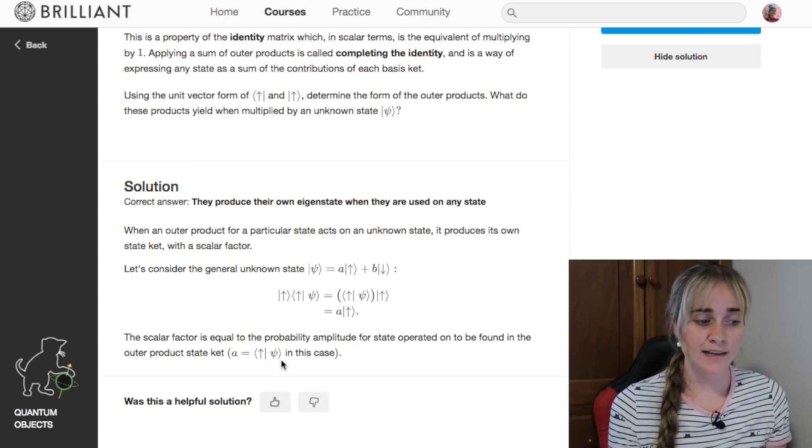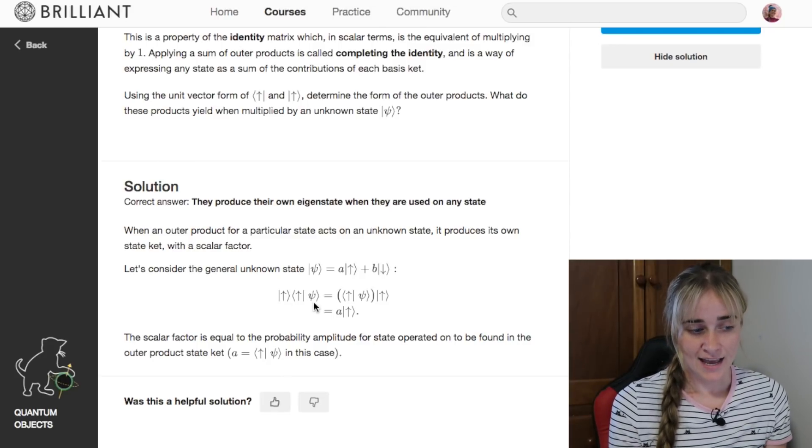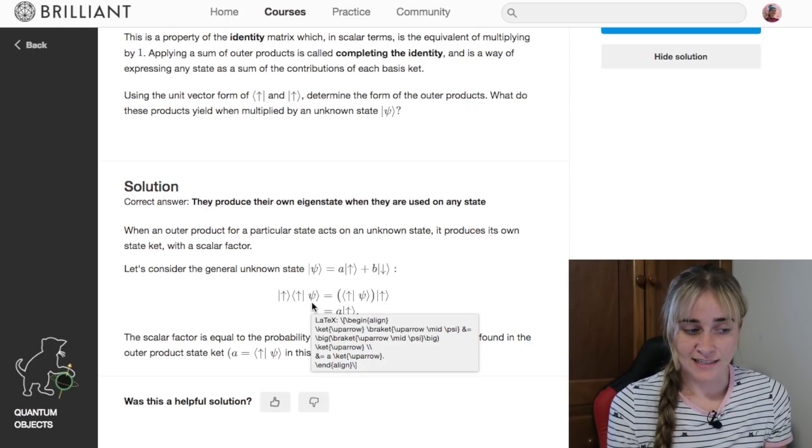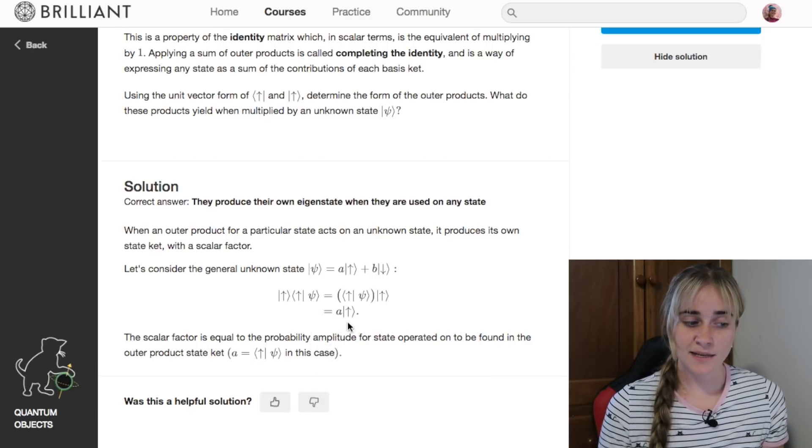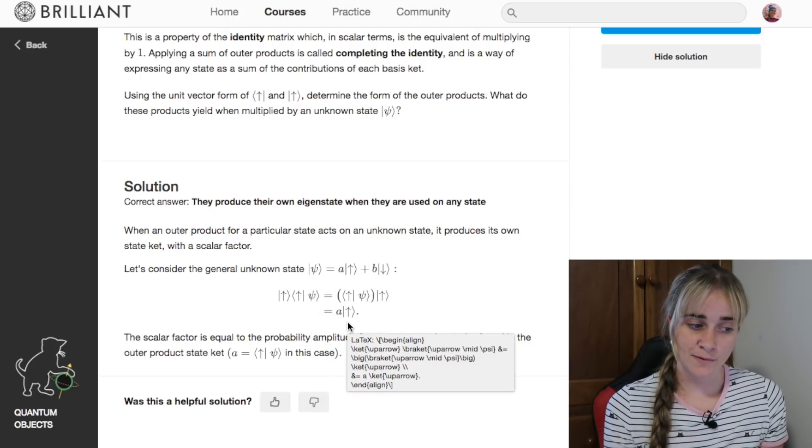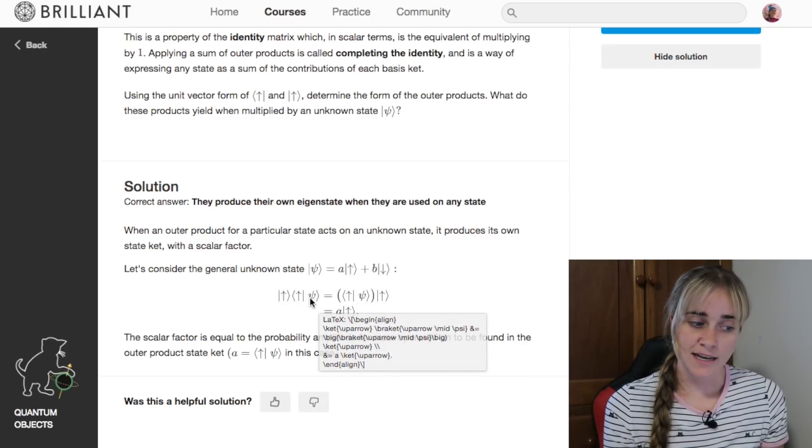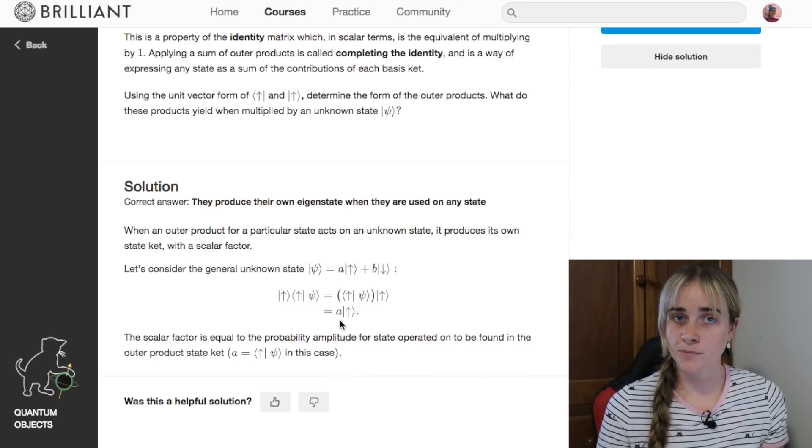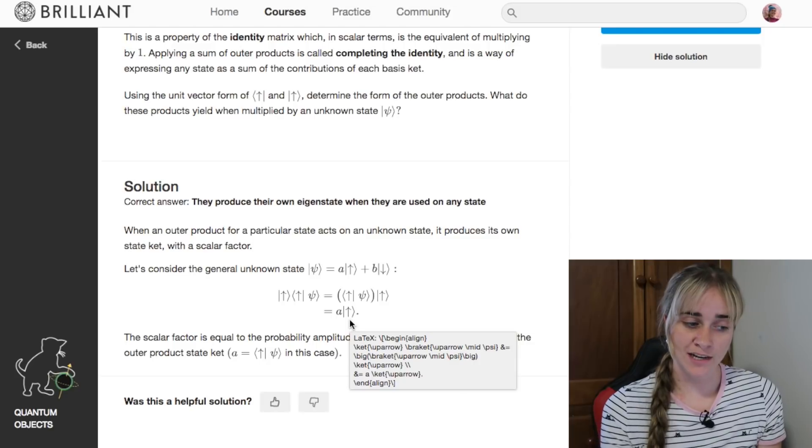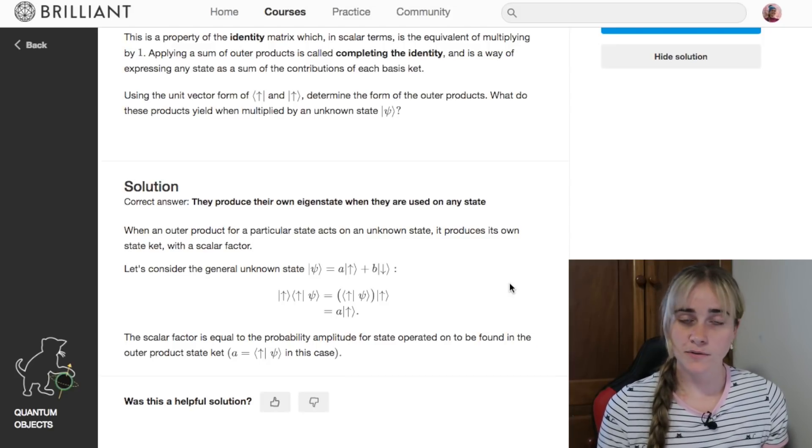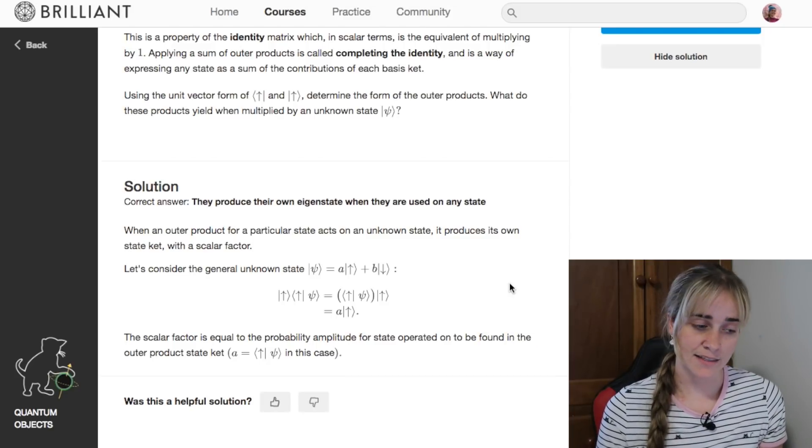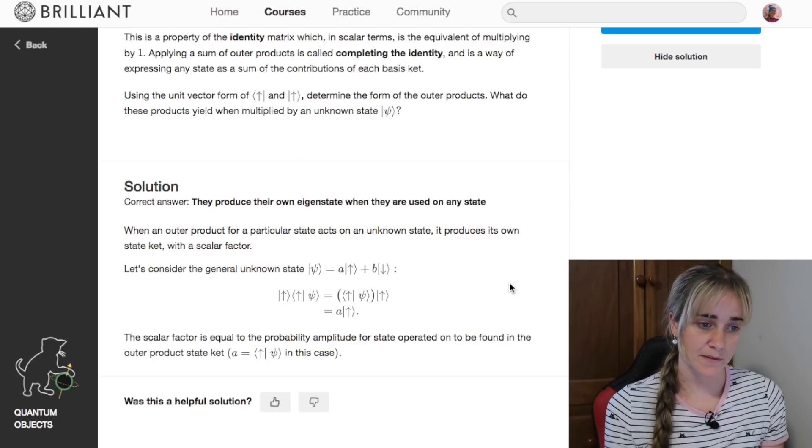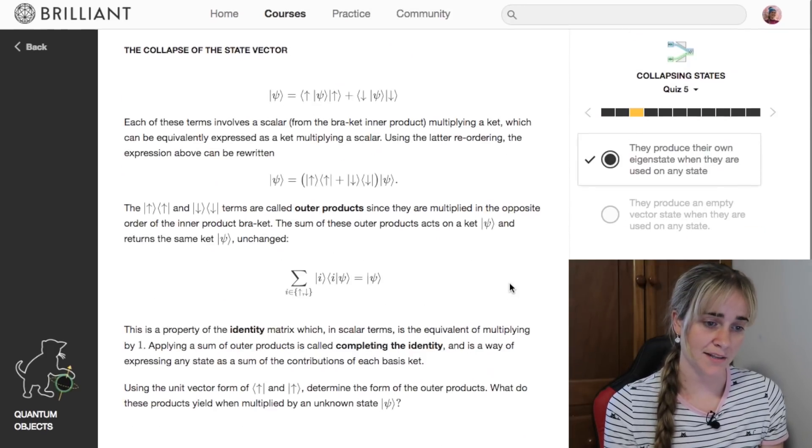So applying an outer product to an unknown state actually makes it end up in a known state. We've gone from being in an unknown state to being in some multiple of spin up, so we've actually changed the state that this quantum particle is in.